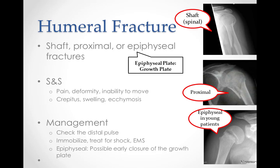Humeral fractures may occur in a number of ways. From a direct blow, this can happen during a fall, landing directly on the elbow, or being struck by a hard object such as a baseball bat, car dashboard, or during a crash. An indirect fracture can happen during a fall if a person lands on their outstretched arm with the elbow locked straight. The ulna is driven into the distal humerus, causing it to break.